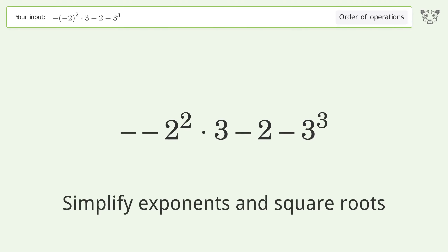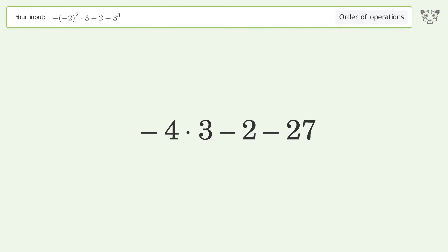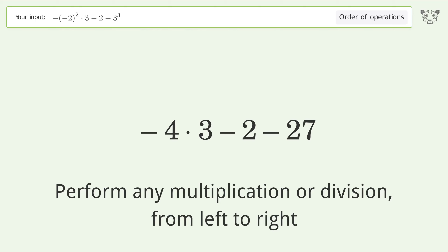First, simplify exponents and square roots. 3 to the power of 3 equals 27. Negative 2 to the power of 2 equals 4. Then perform any multiplication or division from left to right.